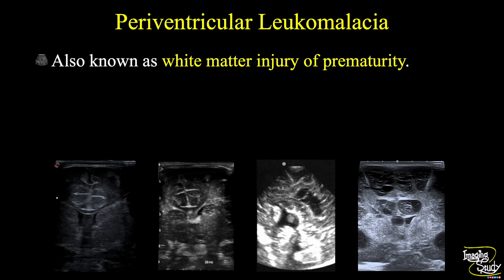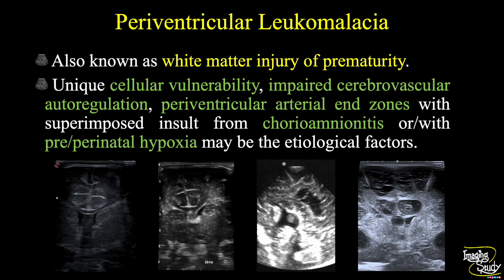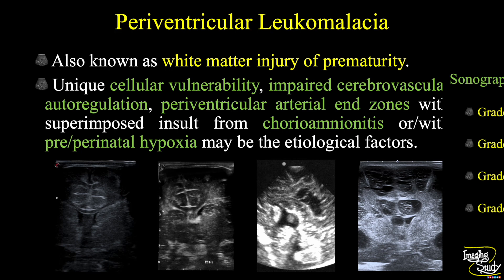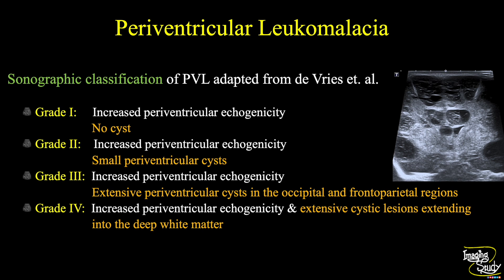Periventricular leukomalacia, also known as white matter injury of prematurity, is very commonly seen in 32–36 week premature neonates where cells of the germinal matrix migrate into the brain parenchyma, causing increased need of vascular flow. Due to cellular vulnerability, impaired cerebrovascular autoregulation, periventricular arterial end zones, with superimposed insult from chorioamnionitis or pre-/perinatal hypoxia, watershed ischemic changes occur and turn into necrotic cystic spaces. We have 4 grades: in grade 1, increased periventricular ecogenicity with no cystic change; grade 2, small periventricular cystic spaces; grade 3, extensive periventricular cystic spaces in the occipital and frontoparietal regions; and grade 4, cystic lesions extending into the deep white matter.